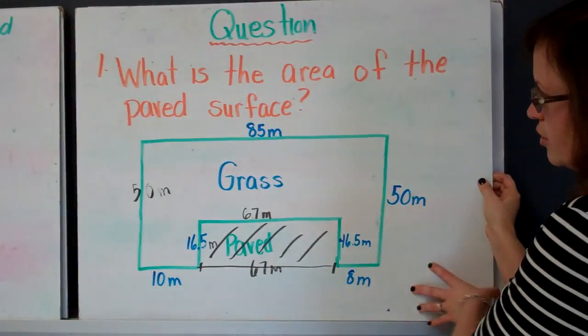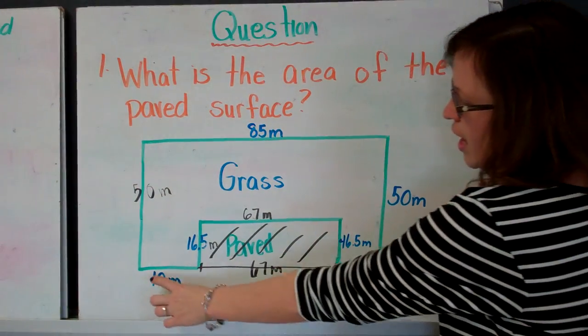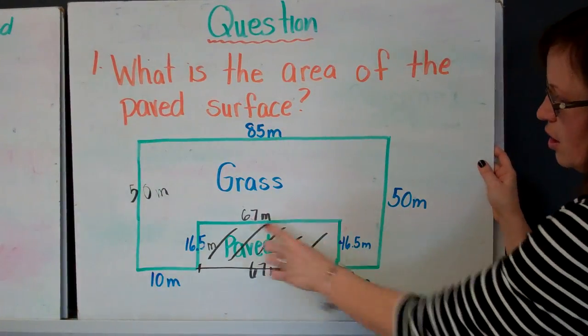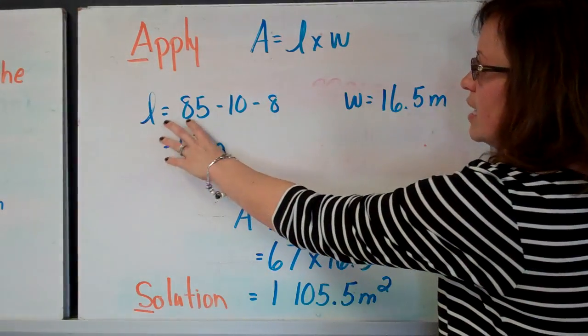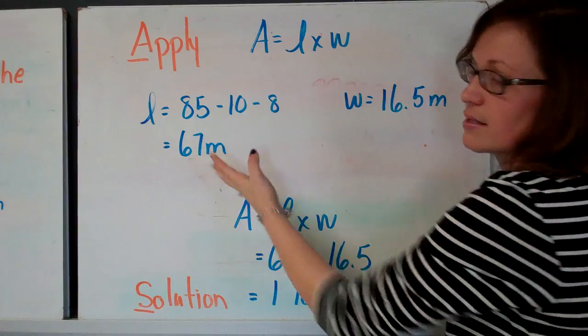Remember, we used the length of this side minus this minus this, which gave us this dimension. And I show that here. Length equals 85 minus 10 minus 8 equals 67 meters.